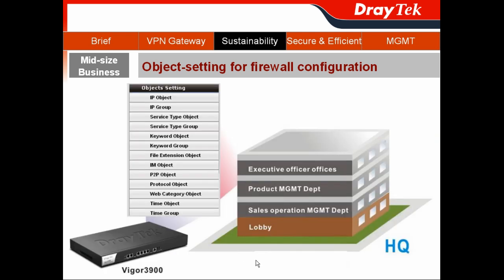In ABC company's story, they have a four-level building as their headquarters. The first floor is for the lobby, the second floor is for the sales operation management department, the third floor is for the product management department, and the highest floor is for the executive officers. For these different departments, you can use IP objects to separate their settings and then create different firewall rules.